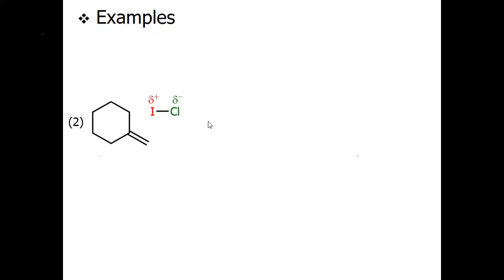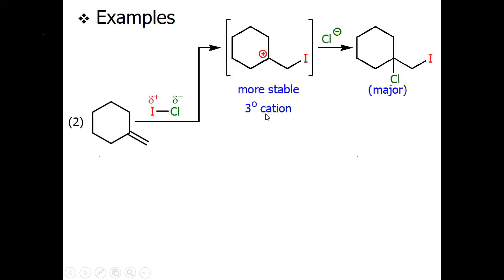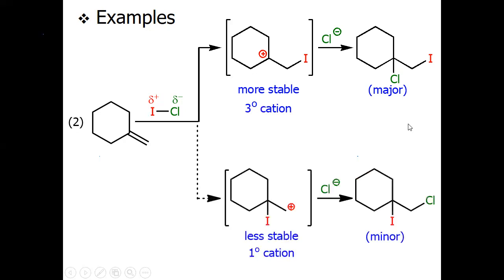Another example: a cyclohexyl derivative with a double bond reacts with iodine chloride (ICl), where iodine serves as the electrophile and chlorine as the nucleophile. Iodine adds to the double bond at the carbon that gives the more substituted, tertiary carbocation. If iodine had added to the other carbon, we would get a less stable primary carbocation. The chloride ion then acts as a nucleophile to give the major product.